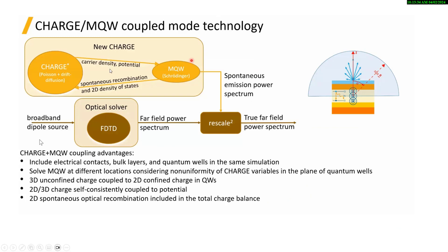This is the way we can use ANSYS software to calculate the micro-LED. With CHARGE we have Poisson and drift-diffusion equations, and with multi-quantum well we have the Schrödinger equation. With CHARGE we calculate the carrier density and potential, and multi-quantum well uses this information to calculate the spontaneous emission and 2D density of states. The output — the spontaneous emission power spectrum — then goes to the FDTD result.